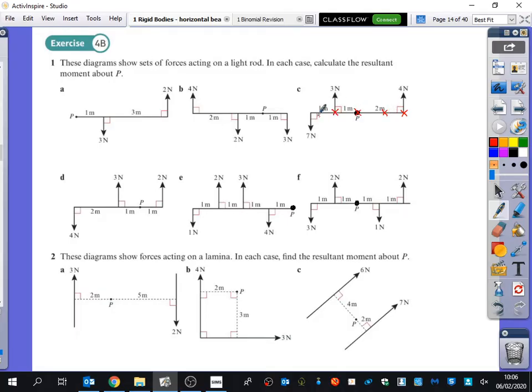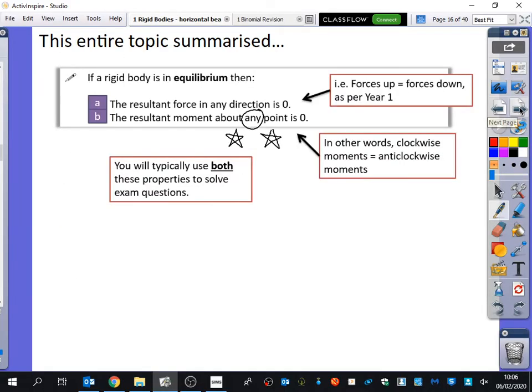If it is in equilibrium, you could take moments here, here, here, here, here. Anywhere you took moments from, imagining that the pivot was at any of these red crosses here, if you pretend the pivot is at any of those points, if it is in equilibrium, the anticlockwise will always be equal to the clockwise. I cannot stress this point enough. You can take the moment about any point, if it's in equilibrium, and it will always be clockwise equals anticlockwise.